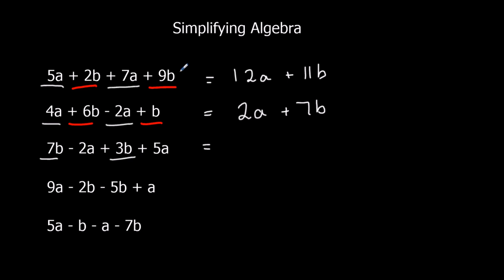I've got the b's and the a's. So I've got 7b and plus 3b, which makes 10b. And I've got minus 2a, plus 5a. Minus 2 plus 5, is 3.